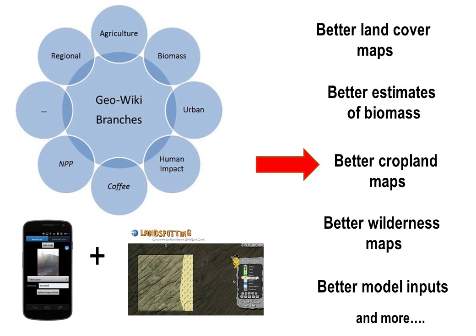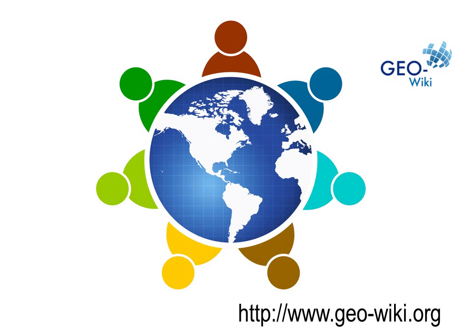Eventually, this will lead to better maps of cropland, biomass, wilderness, land cover, and so on, all of which will become open source. So all of you here can help us by contributing through GeoWiki, whether you use our system or help spread the word. We truly believe that by improving our basic knowledge about land cover and opening this up for anyone to use, it will ultimately lead to a better, more food-secure, and environmentally sustainable world. Thank you very much.